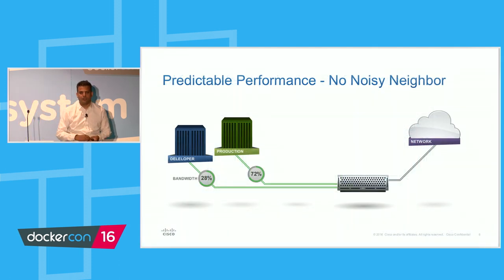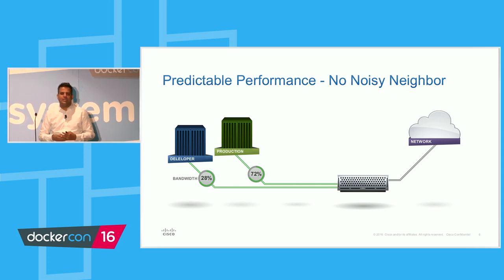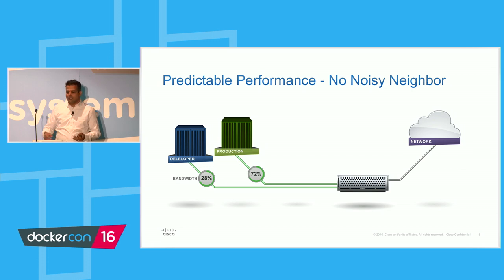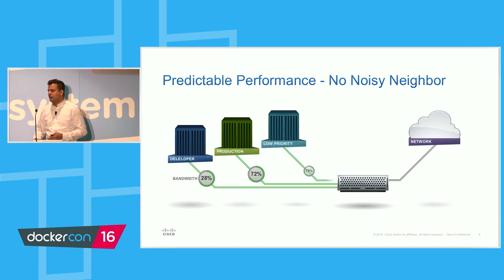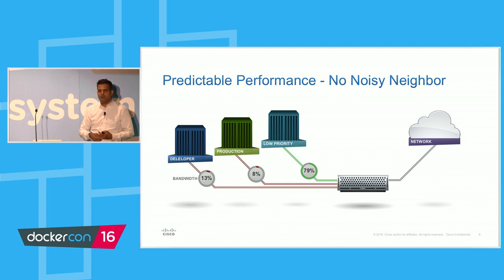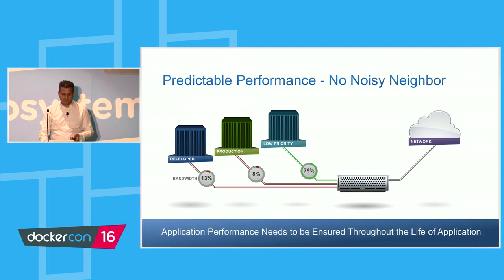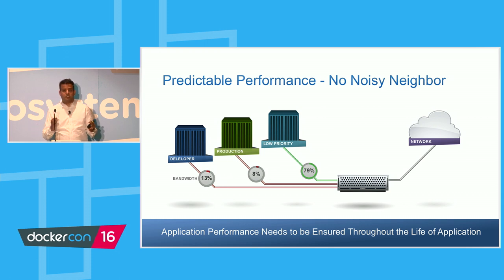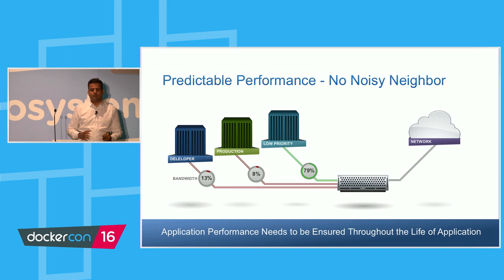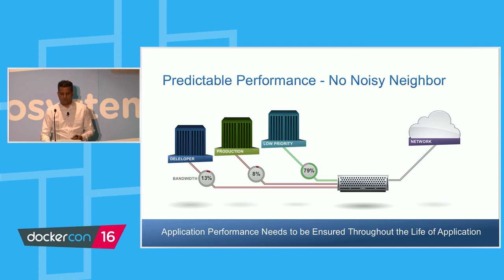The other requirement is guaranteeing performance. Let's say you deploy a couple of containers — one is a dev app, one is a production app — and it's working fine. But then Swarm places another container on that same server and it starts hogging bandwidth, so the production app's bandwidth goes down. How do you prevent those noisy neighbor problems? You need to ensure that not just CPU and I/O performance are fine today, but also that when someone deploys something new to the same cluster tomorrow, it doesn't impact your production app.